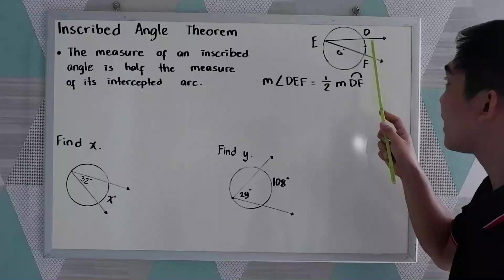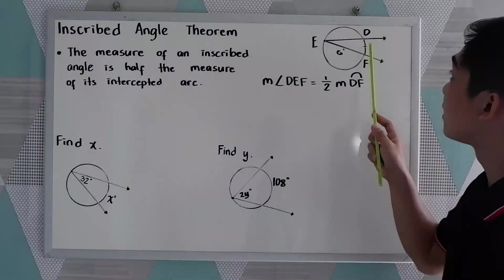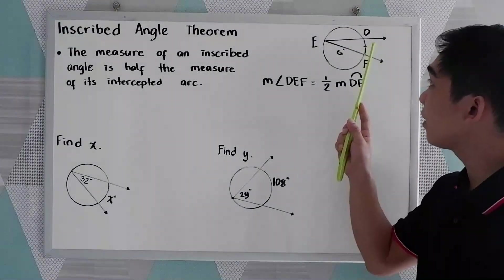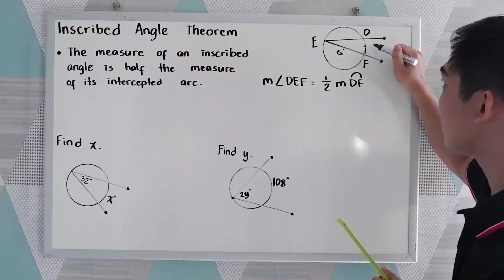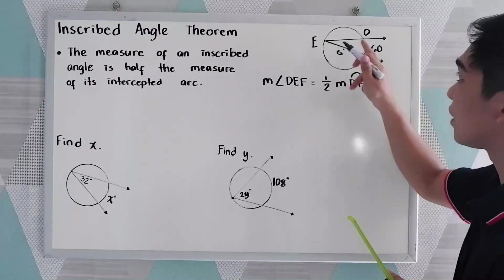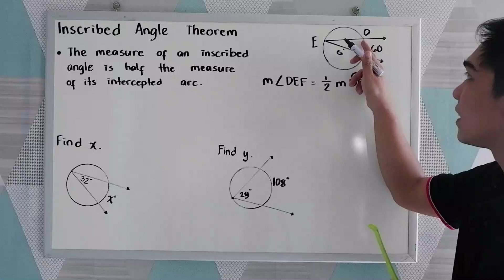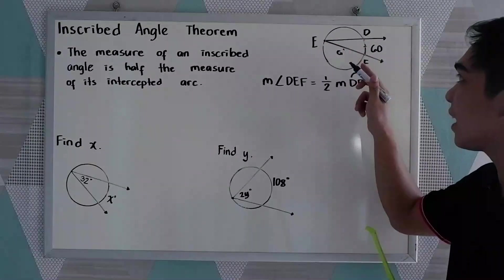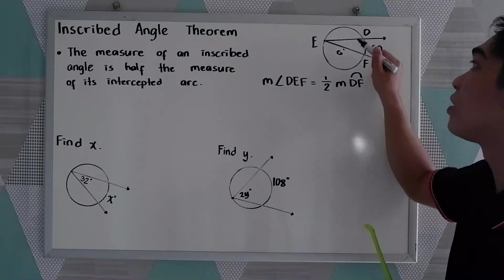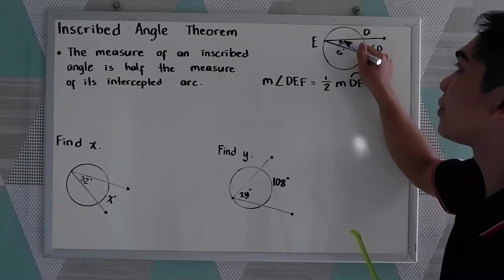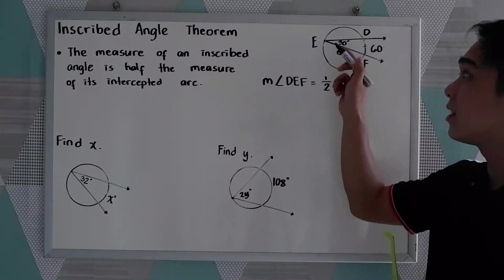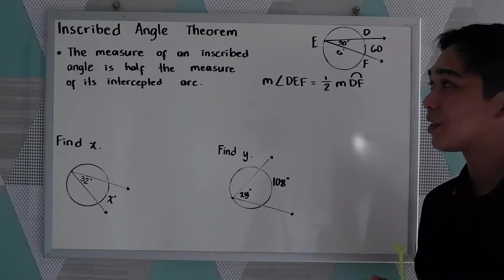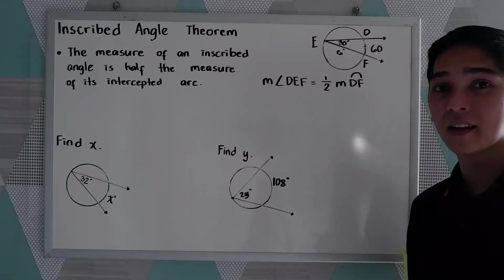Let's say our D-E-F here is 60. If this is 60, therefore, the measure of angle D-E-F is half of this measure. So, this will become 30. 60 divided by 2, that is 30. So, that is the Inscribed Angle Theorem.